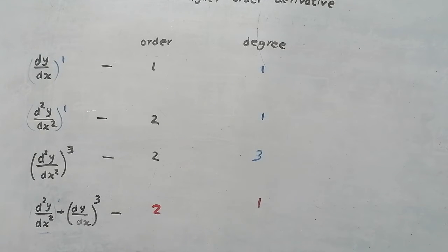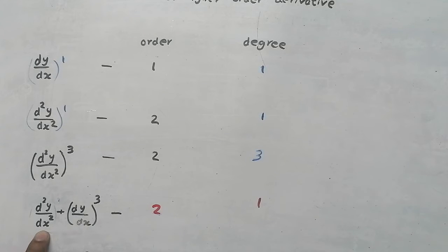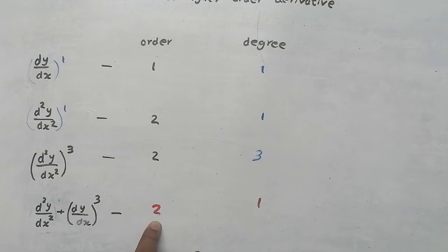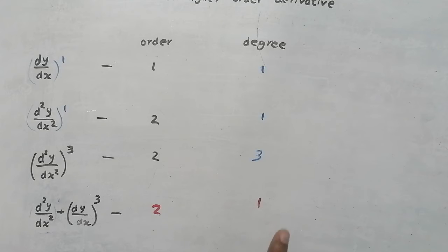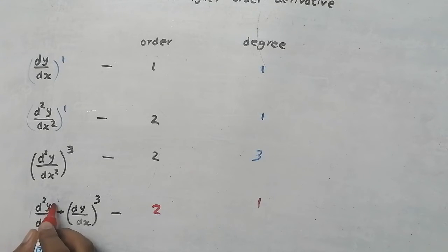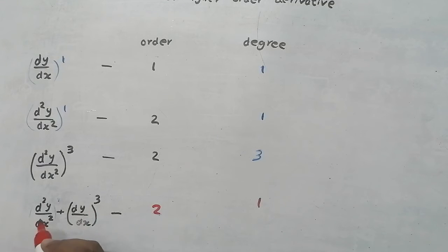When you get the equation, first of all check which term is having the highest order. Here it is 1st order, here it is 2nd order, so the order is 2. Now for degree — degree is the power of the highest order term. This is the highest order term; the power of that term is what we use. Do not take the power of other terms — only the power of the highest order term. That is the degree.